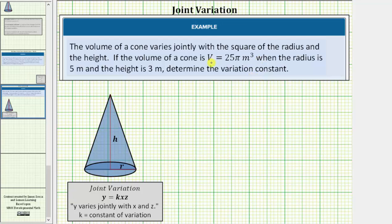For review, the basic joint variation equation is y equals k times x times z, and we say y varies jointly with x and z, and k is the constant of variation or variation constant.